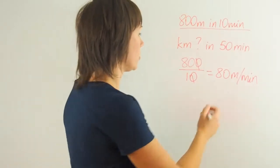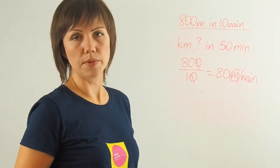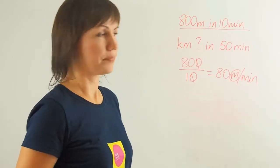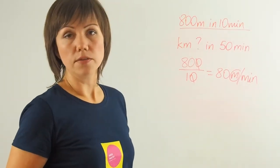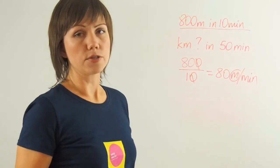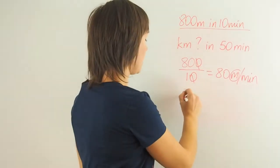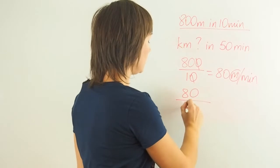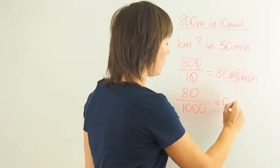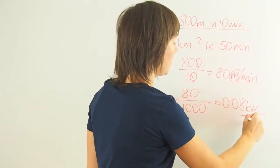Now we can convert meters into kilometers because the question is asking us to determine how many kilometers she runs in 50 minutes. There are 1000 meters in one kilometer. So in order for me to go from 80 meters to kilometers, I need to divide 80 by 1000. 80 divided by 1000 gives me 0.08 kilometers per minute.